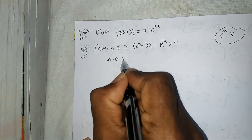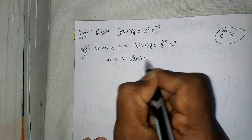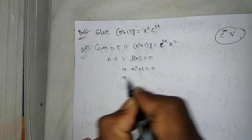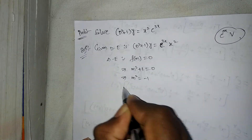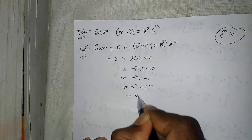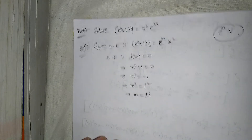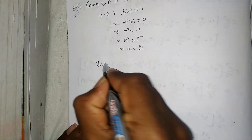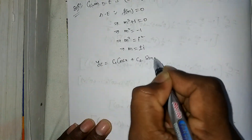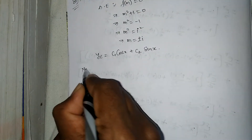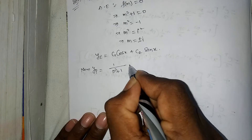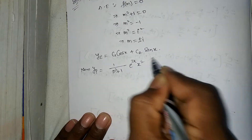The auxiliary equation is f(m) = 0, which implies m² + 1 = 0, so m² = -1, that implies m² = i², therefore m = ±i. The complementary function is yc = c₁cos(x) + c₂sin(x). Now yp = 1/(D² + 1) · e^(3x) · x².